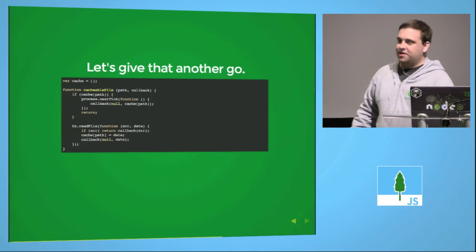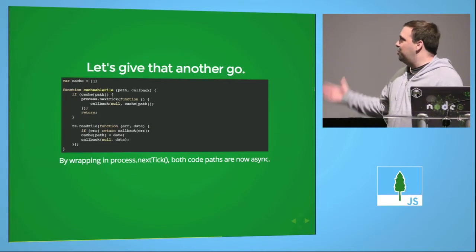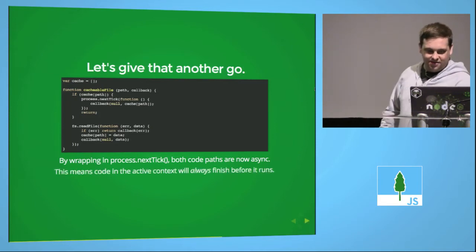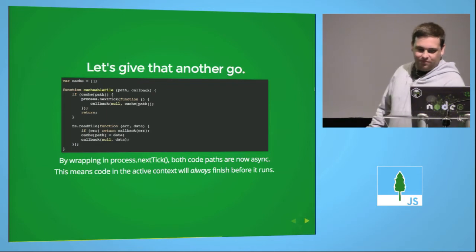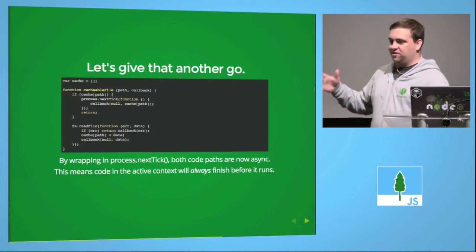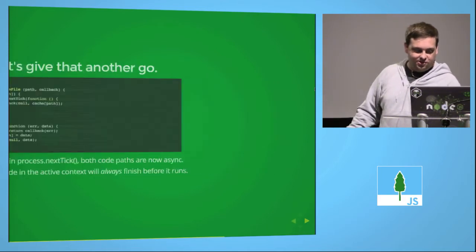Let's give that another go. I wrapped it in a process.nextTick, and now both paths are async. That's better. Now either path will always execute in the same way — it's predictable.